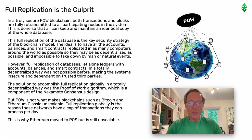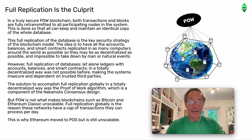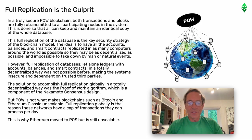In a truly secure Proof-of-Work blockchain, both transactions and blocks are fully retransmitted to all participating nodes in the system. This is done so that all can keep and maintain an identical copy of the whole database. This full replication of the database is the key security strategy of the blockchain model. The idea is to have all the accounts, balances and smart contracts replicated in as many computers around the world as possible, so they may be as decentralized as possible and impossible to take down by man or natural events. However, full replication of databases — let alone ledgers with accounts, balances and smart contracts — in a totally decentralized way was not possible before, making the systems insecure and dependent on trusted third parties. The solution to accomplish full replication globally in a totally decentralized way was the Proof-of-Work algorithm, which is a component of the Nakamoto consensus design.